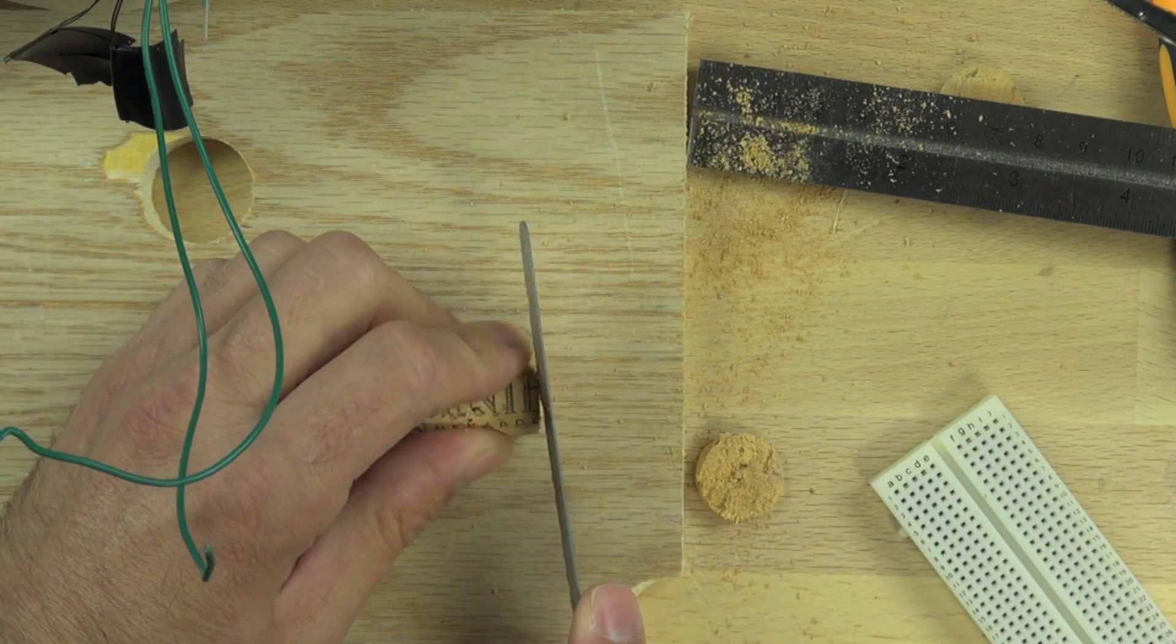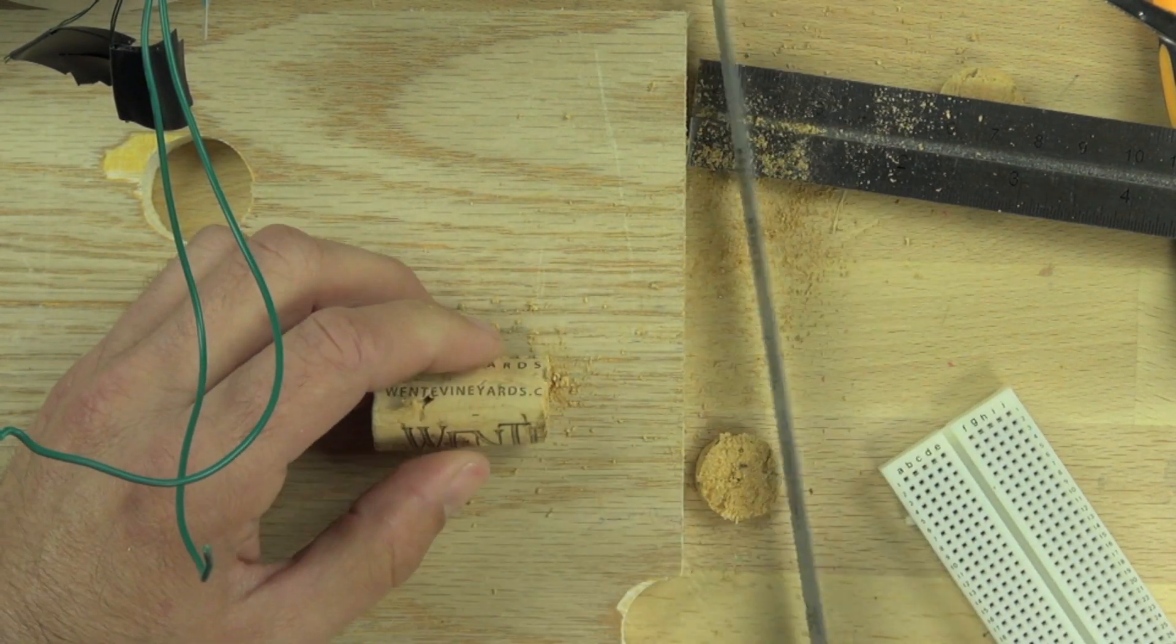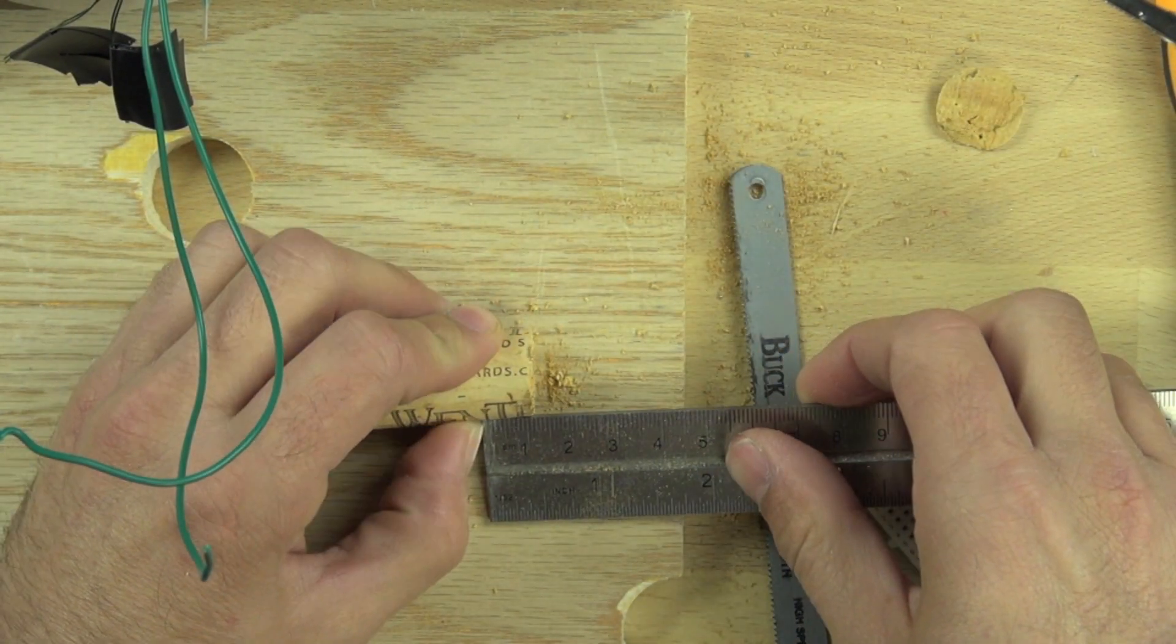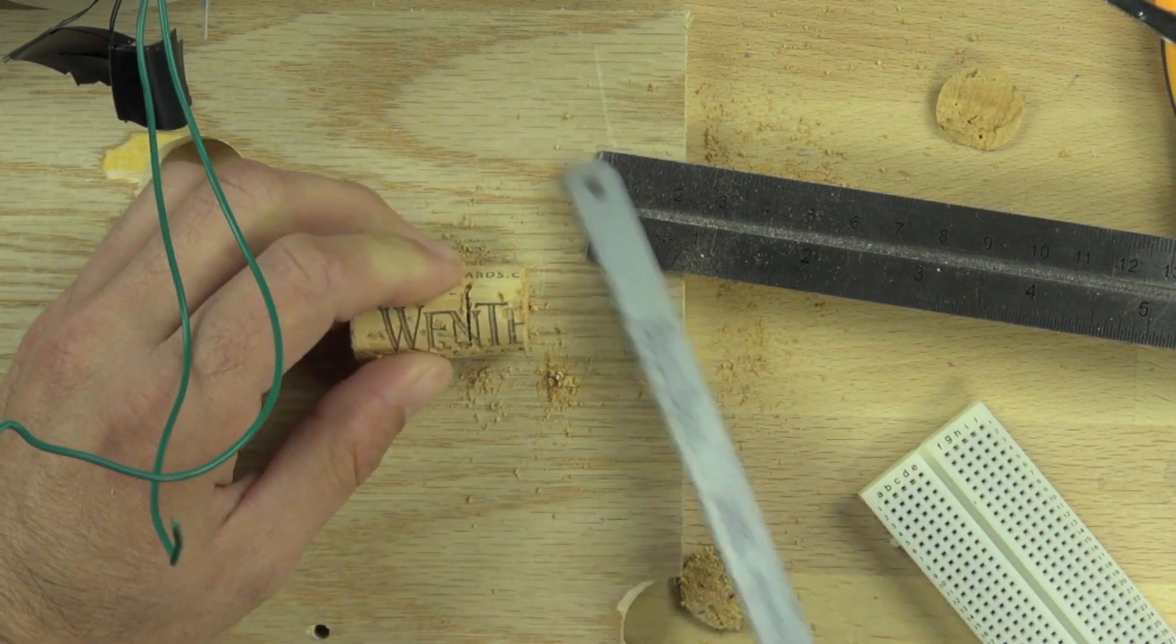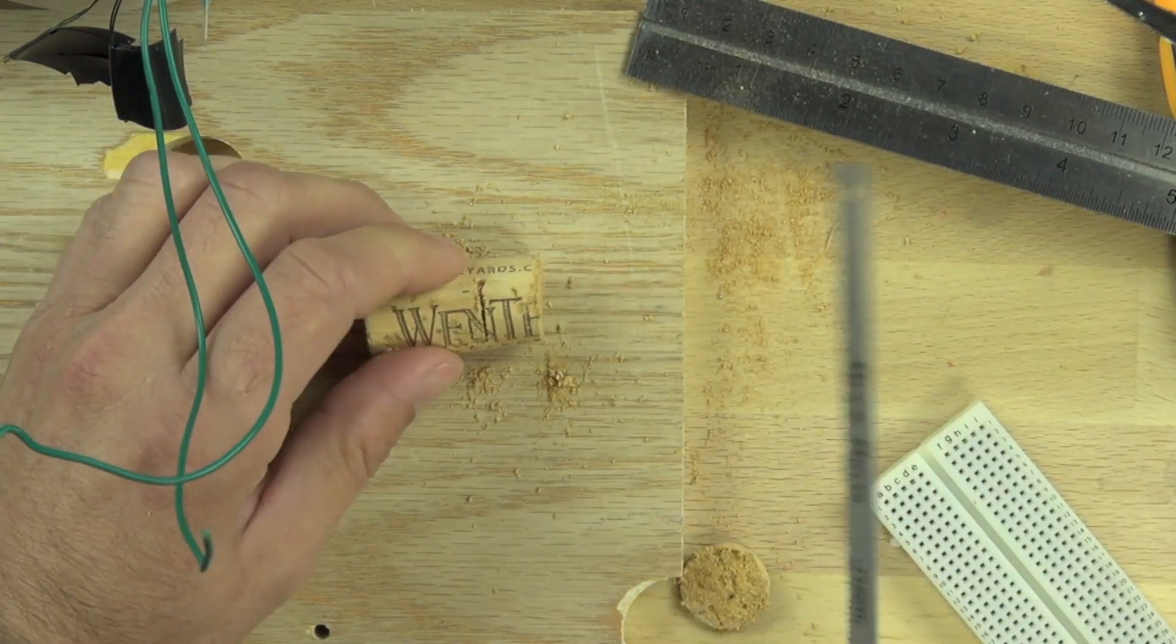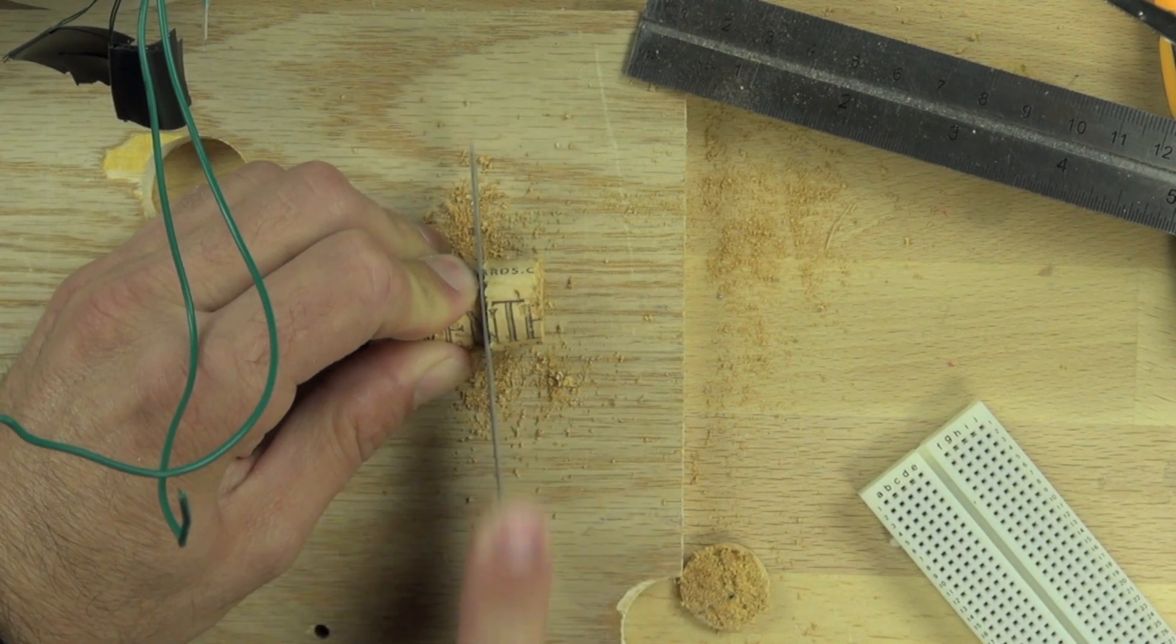You can see the cut's not perfectly straight. To fix that, we're going to cut the cork just a little bit larger than we need it to be, close to two centimeters.